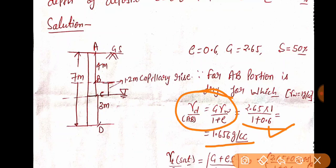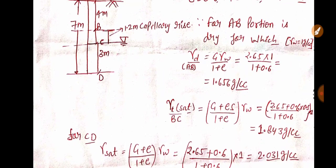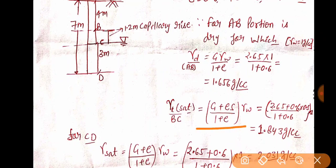That is 1.656 gram per cc. Now we will find gamma t — that means this is your capillary rise portion. Here gamma is not completely saturated. So gamma t exists. Gamma t = (G + e·S) / (1 + e) × γw. G value हमारे पास है, E value है, saturation 50% है, so S = 0.5, and e = 0.6. When you simplify this, you got 1.843 gram per cc.